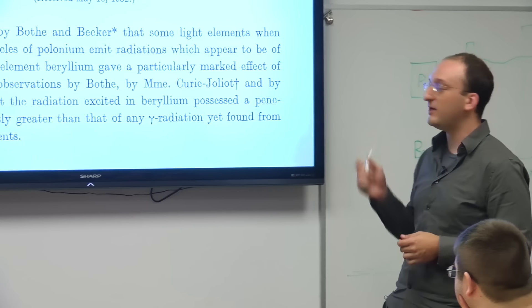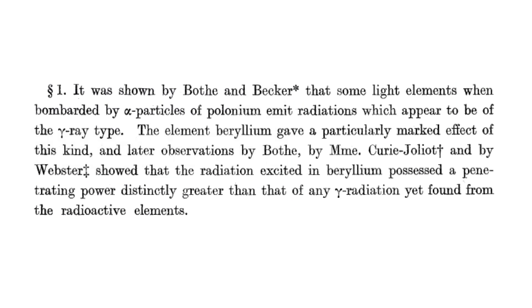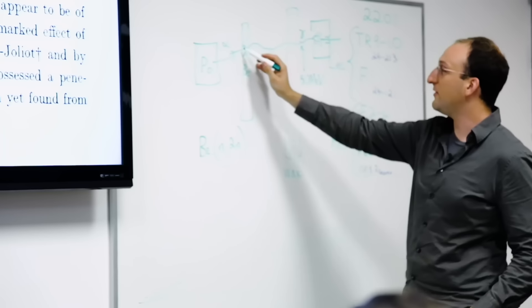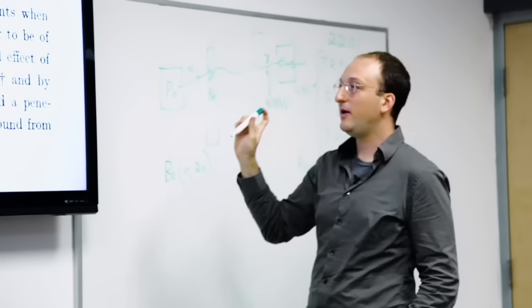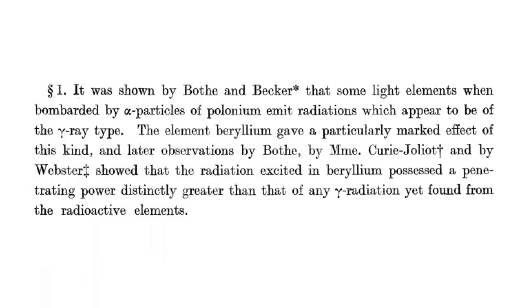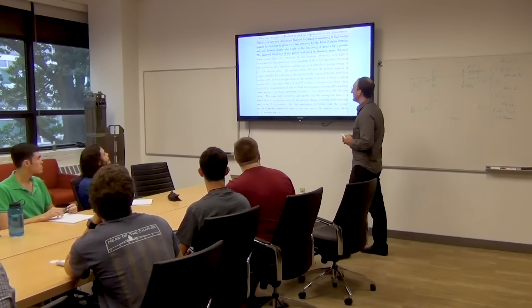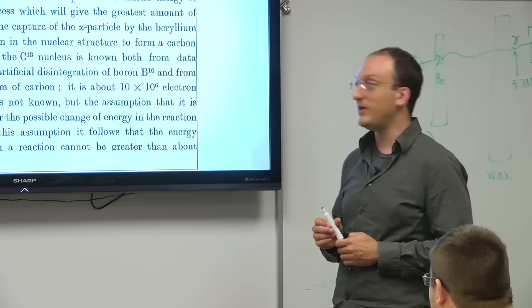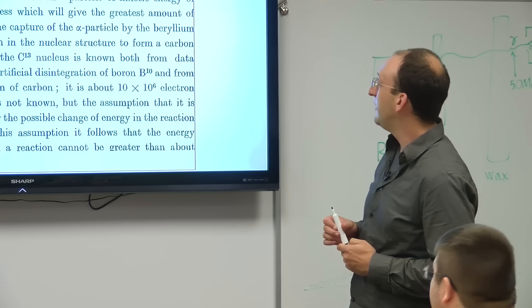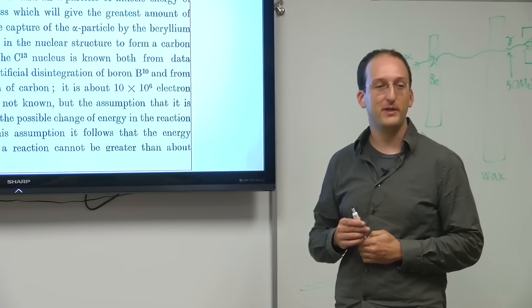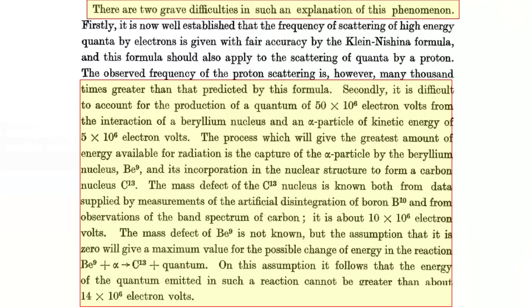That's what Chadwick noticed. He said theory and experiment don't work unless we throw out conservation of energy and momentum. Whether this was passive-aggressive—saying this clearly can't exist—or suggesting maybe it doesn't work, I don't know. But later, about a year later, he published a follow-on paper confirming the existence of a neutron by reconciling these differences in theory and experiment. Take a minute and read through this part.